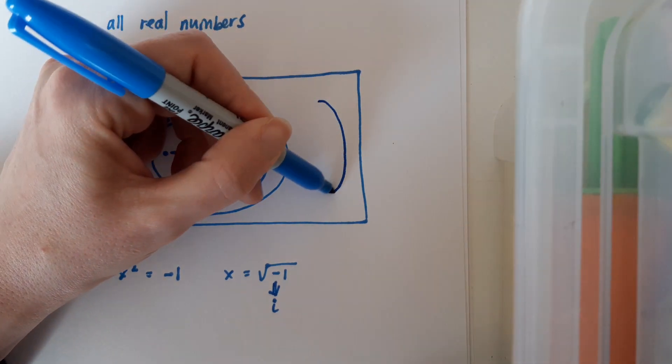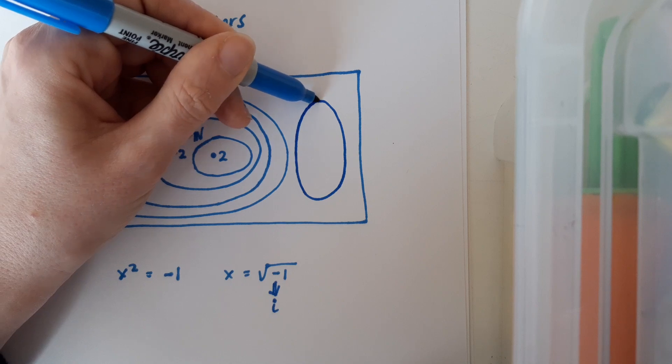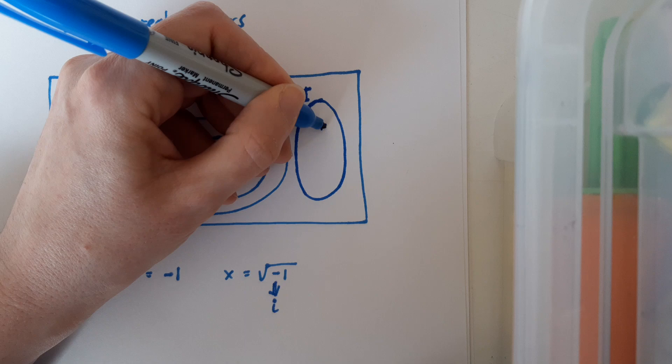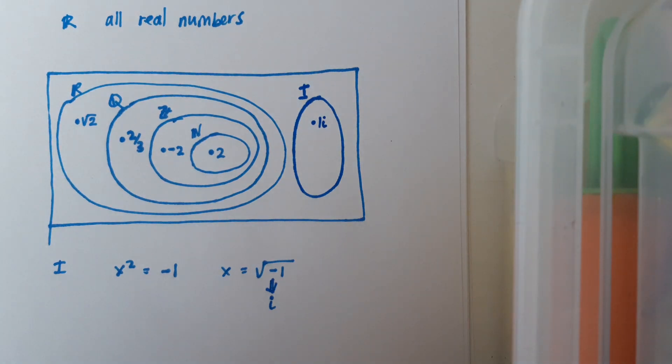Because the imaginary numbers set goes over here. And for example I have 1i, 2i, and so on.